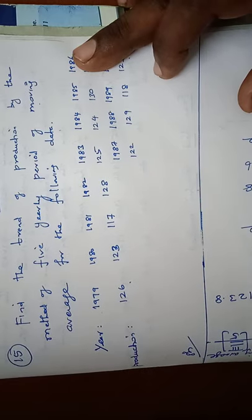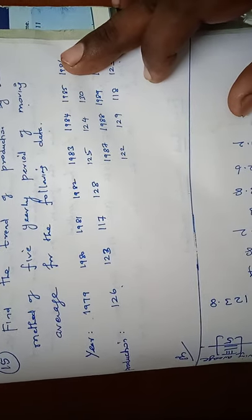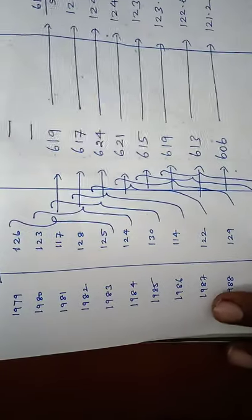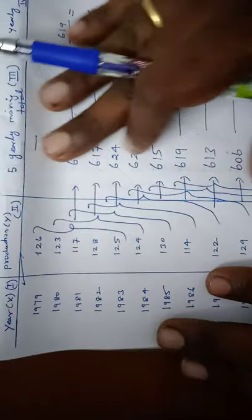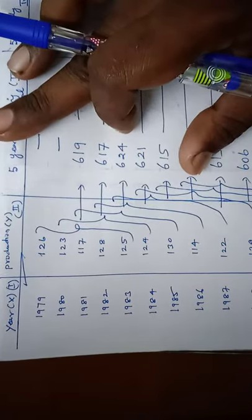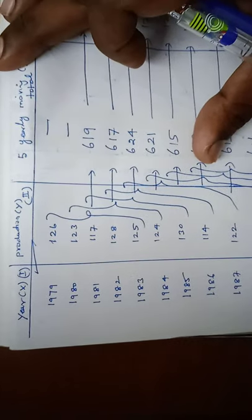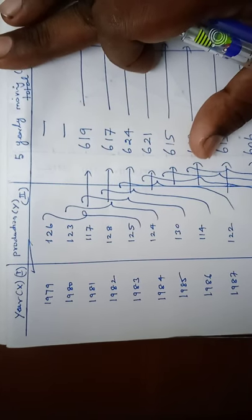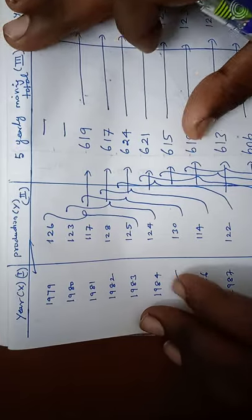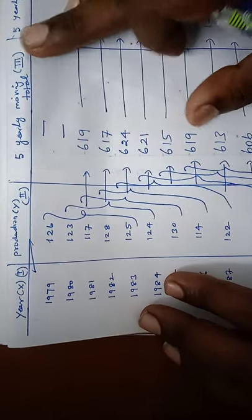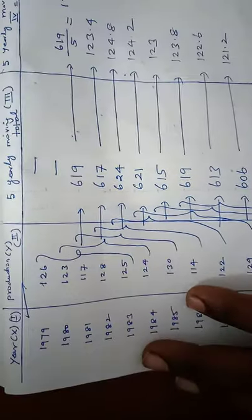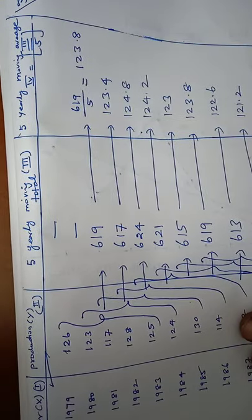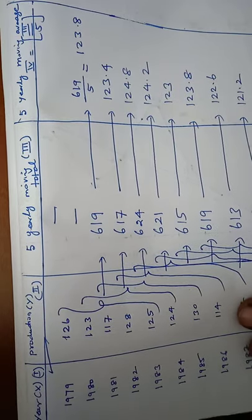To find the trend values, we'll set up a table. The first column is the year (x), the second column is production, the third column is the 5-yearly moving total, and the last column is the 5-yearly moving average.